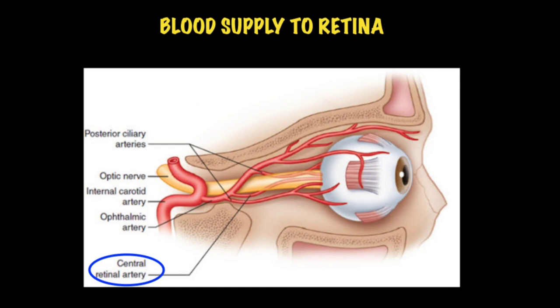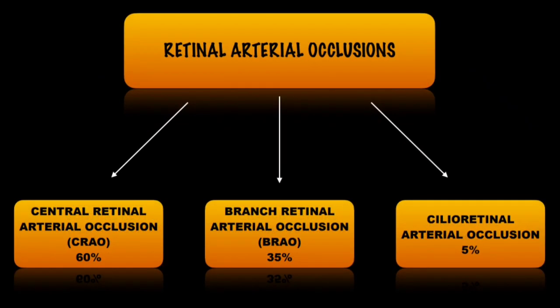First, let's cover the blood supply of the retina. The internal carotid artery gives out a branch called the ophthalmic artery, and the ophthalmic artery gives out a branch called the central retinal artery. The central retinal artery travels along with the optic nerve within the optic sheath, pierces through the lamina cribrosa, enters the retina, and gives out two branch retinal arteries. Most occlusions of the central retinal artery occur at the level of the lamina cribrosa, because that's where it is packed very tightly and more prone to occlusion.